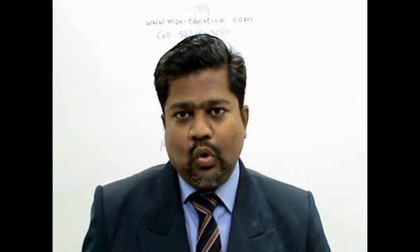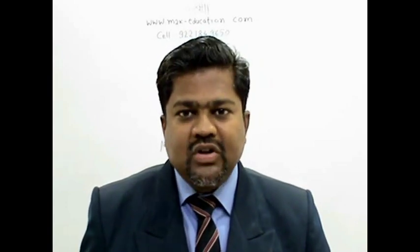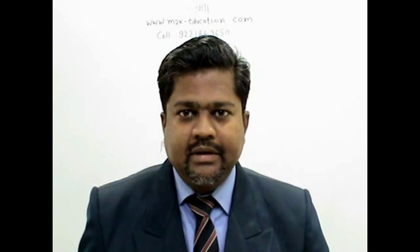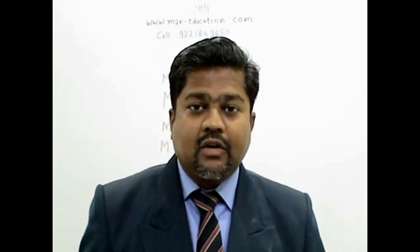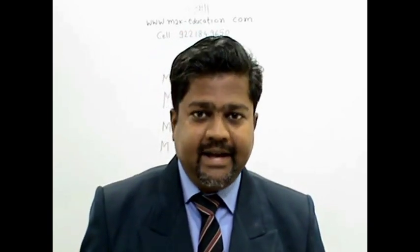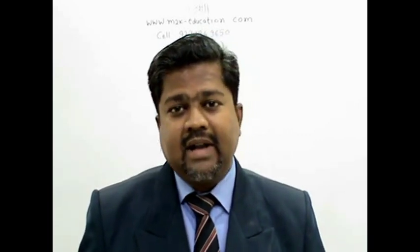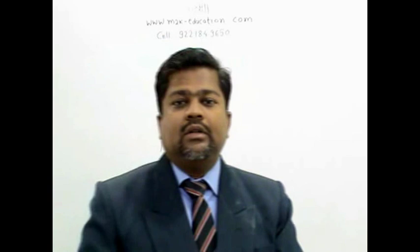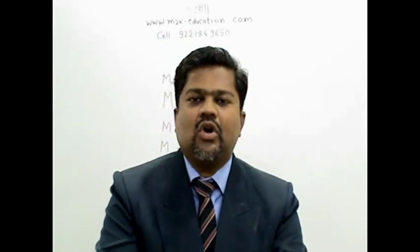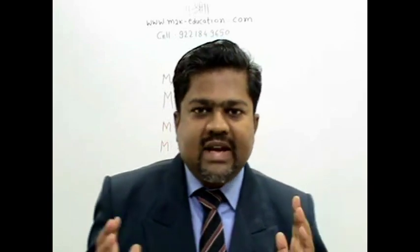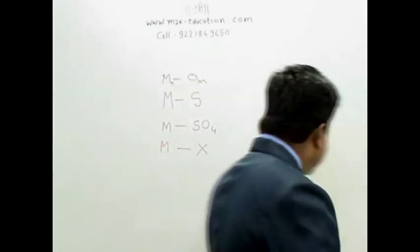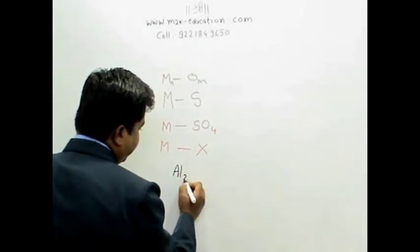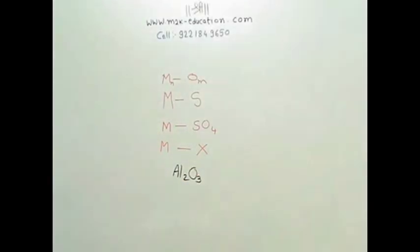The principal ore of aluminum is bauxite. Bauxite is abundantly available. Try to recollect earth crust we discussed - the upper part of earth crust is called Sial. As a result, we have abundant aluminum. But the separation of bauxite is a costlier process. Bauxite is usually in form of a compound called Al2O3. This compound is called alumina.